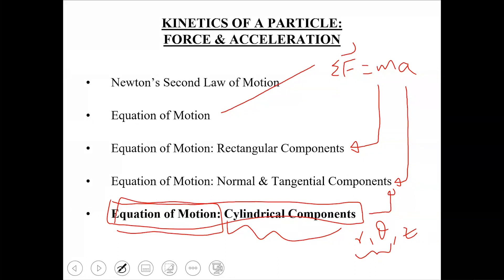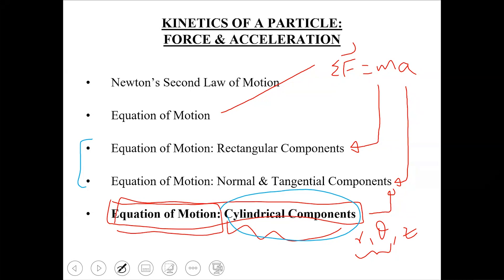Today's topic is very similar to the previous two topics — we are going to apply the same equation of motion, but written in terms of its cylindrical components, that is r, theta, and z components — the polar coordinates r and theta along with the z axis. Applying equation of motion in cylindrical components is slightly more complicated compared to x-y or n-t axes, because you have forces acting along the normal axis, tangential axis, and weight along the negative y axis, and you need to resolve all of these along r, theta, and z — so you are dealing with three coordinate systems.